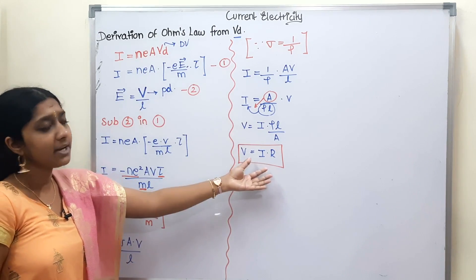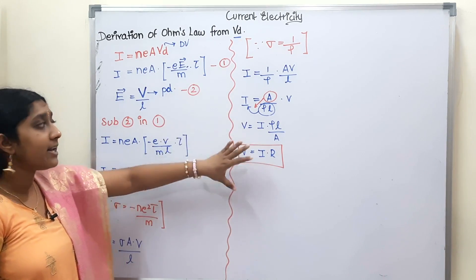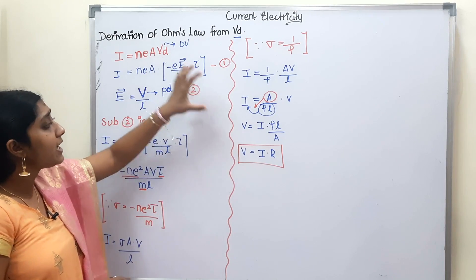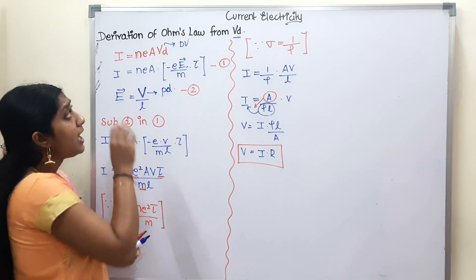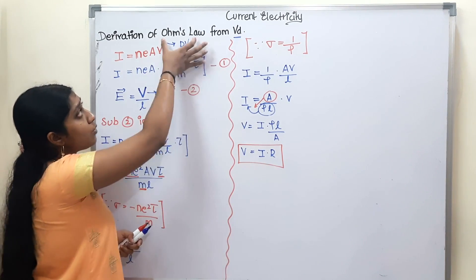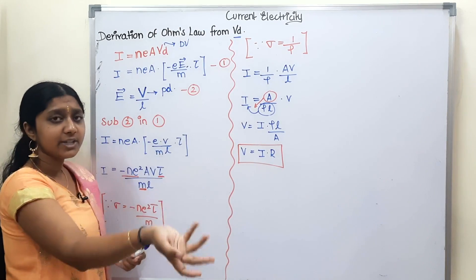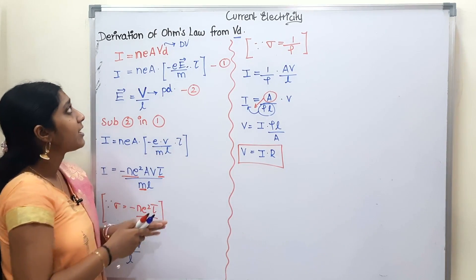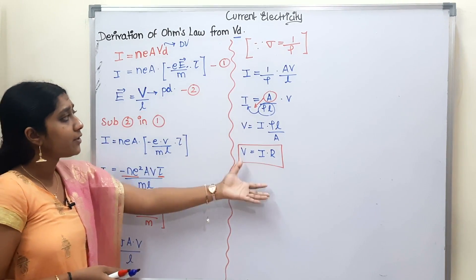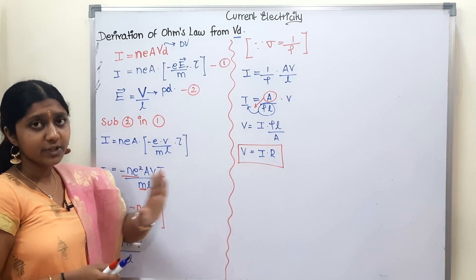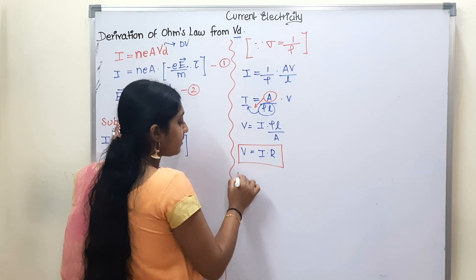This is Ohm's Law. We have derived Ohm's Law using the concept of drift velocity. The derivation is complete. In the next section, I will provide the basic derivation summary.